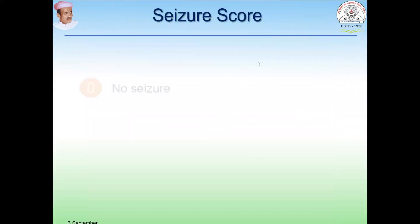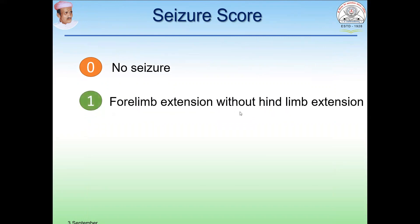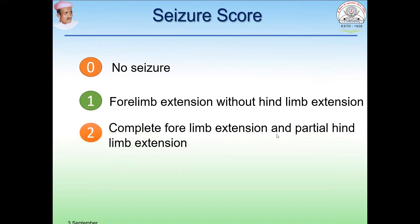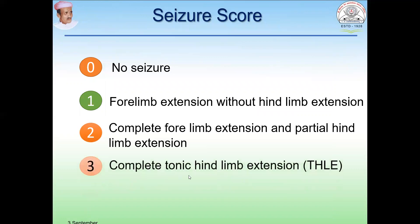To score the seizures: if there is no seizure, score it as zero. If forelimb extension without hind limb extension is observed, score it as one. If complete forelimb extension and partial hind limb extension is observed, score it as two. When complete tonic hind limb extension (THLE) is observed, score it as three. Score four is post-ictal depression. Accordingly, one can observe the development and stages of seizures and assign these scores.